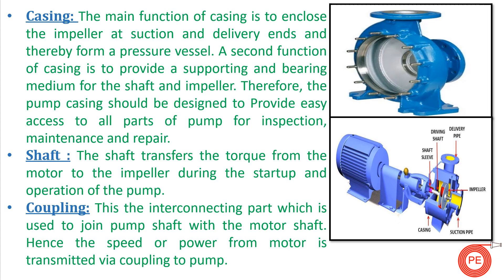Next is the coupling. Coupling is the interconnecting part which connects the pump with the motor. The speed and power from the motor is transmitted via the coupling to the pump. You can see the coupling, shaft, motor, pump, impeller, suction side, and discharge side all represented in this diagram.